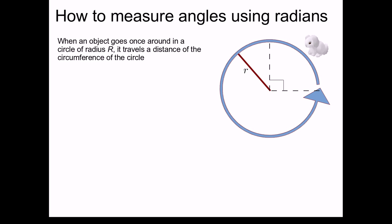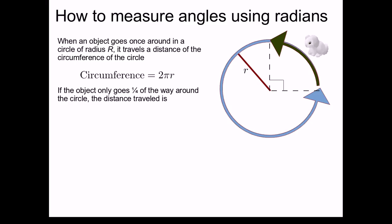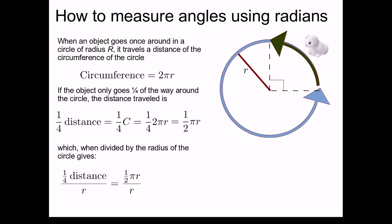So here's my dust bunny going around a circle. When an object goes once around a circle of radius r, it travels a distance equal to the circumference of the circle, which we know from geometry to be 2πr. Now what if the dust bunny only goes around a quarter of the circle? Well, then the distance that the bunny would travel would be one quarter of the circumference, or one quarter 2πr, which when you simplify it, is one half πr. When we take this distance, one half πr, and divide it by the radius, we get π over 2.